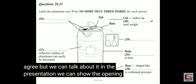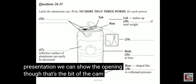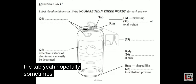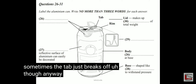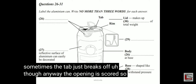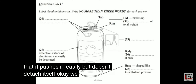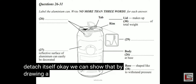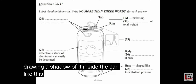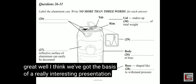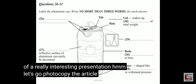We can show the opening — that's the bit of the can that drops down into the drink when we pull the tab. Sometimes the tab just breaks off. Anyway, the opening is scored so that it pushes in easily but doesn't detach itself. We can show that by drawing a shadow of it inside the can. I'll label it 'scored opening'. Well, I think we've got the basis of a really interesting presentation. Let's go and photocopy the article — I'll take it home and study it some more.